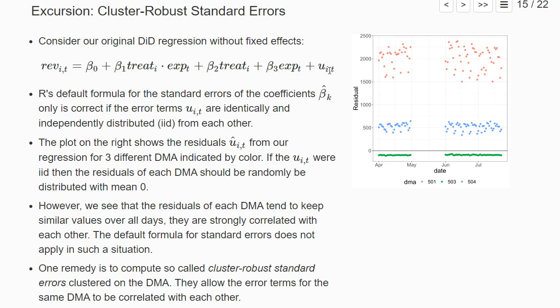Often this assumption is violated. The plot here on the right shows the residuals from our regression for three different DMAs indicated by color. I've shown for all three DMAs residuals for every day, and the green residuals are all for market error 503.